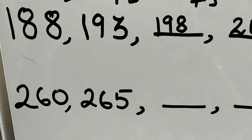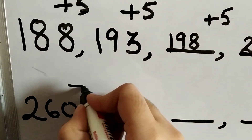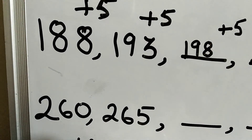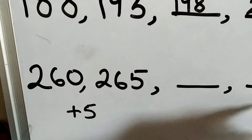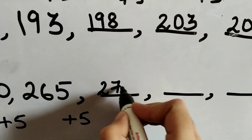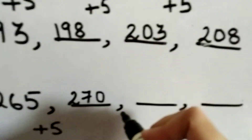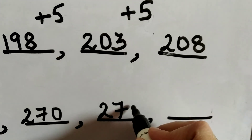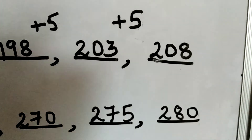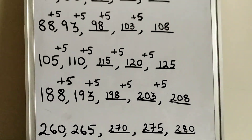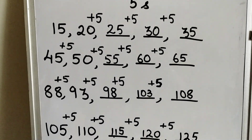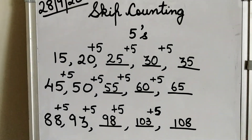The last question: 260 and 265 — again a very simple category. We are just adding 5. So 265 plus 5 is 270, then 275, then 280. This is how we do these questions. This is the whole pattern of skip counting in fives — we are just adding 5 to all the numbers. That's all for today's class. Thank you.